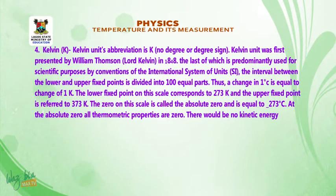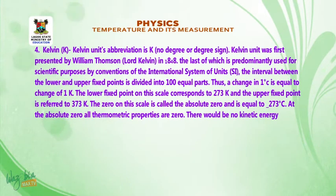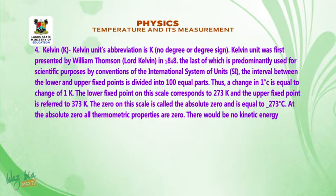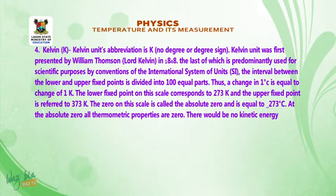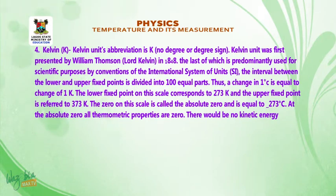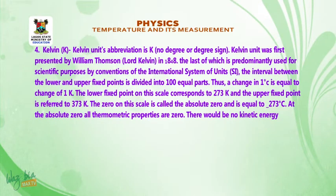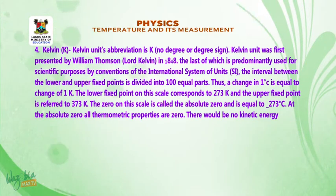On the Kelvin scale, the interval between the lower and upper fixed points is divided into 100 equal parts, so a change of one degree Celsius equals a change of one Kelvin. The lower fixed point corresponds to 273 K and the upper fixed point to 373 K. The zero on this scale is called absolute zero, equal to minus 273 degrees Celsius. At absolute zero, all momentum properties are zero and there is no kinetic energy.